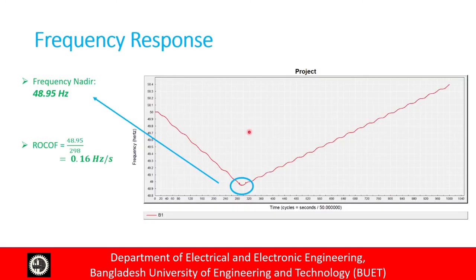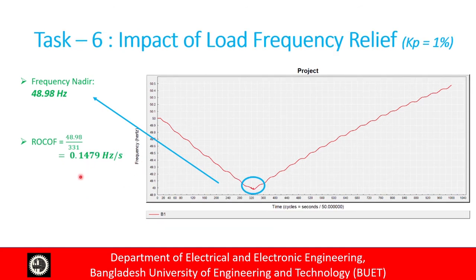Looking at the frequency response with the zoning scheme, for kp equal to zero we get a frequency nadir of 49.95 Hz and RoCoF of 0.16 Hz/s. Before zoning-based load shedding, the frequency nadir was 49.4 Hz, and after zone-based load shedding we can see improvement in the frequency nadir. In Task 6, we investigate the impact of load frequency relief, varying kp from 1% to 3%. For kp equal to 1%, the frequency nadir is 48.98 Hz and the RoCoF is 0.1479 Hz/s.